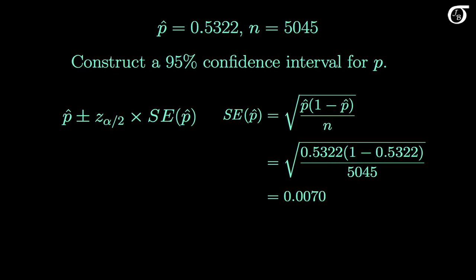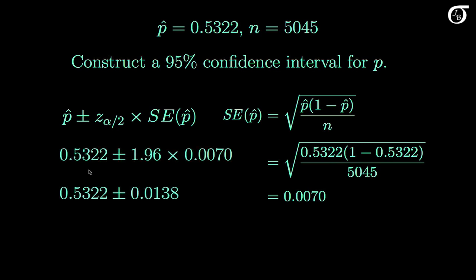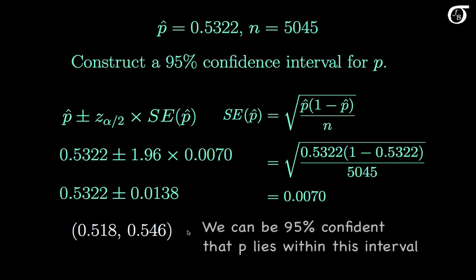I'm displaying only 4 decimal places, but make sure you carry many decimal places throughout the calculations. Once we've got the standard error, the calculations are quite straightforward. P hat is 0.5322, and the appropriate Z value for a 95% confidence interval is 1.96, and we just calculated the standard error to be 0.0070. This all works out to 0.5322 plus and minus the margin of error of 0.0138, which results in an interval of 0.518 to 0.546.